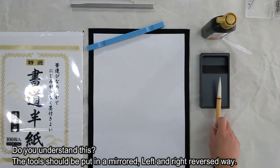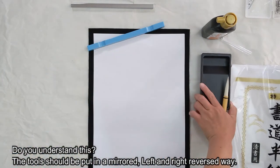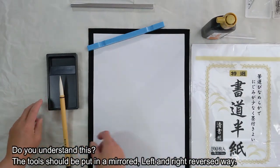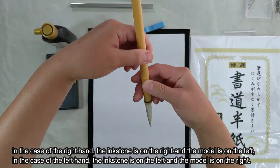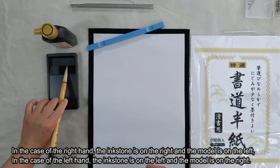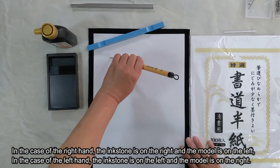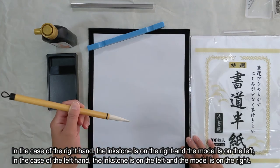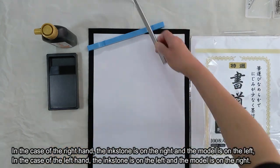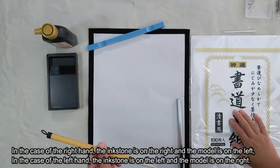Do you understand this? The tools should be put in a mirrored, left and right reversed way. In the case of the right hand, the ink stone is on the right and the model on the left. In the case of the left hand, the ink stone is on the left and the model is on the right.